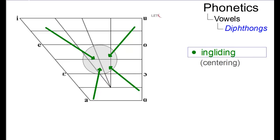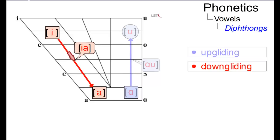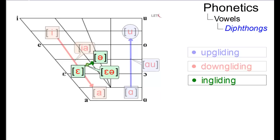Here are some examples. Au can be classified as an upgliding diphthong. Ia is downgliding, and er is ingliding.